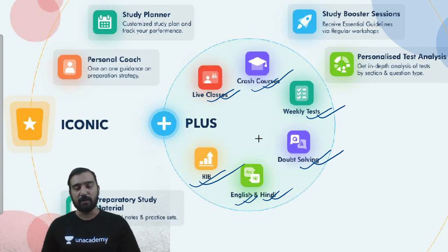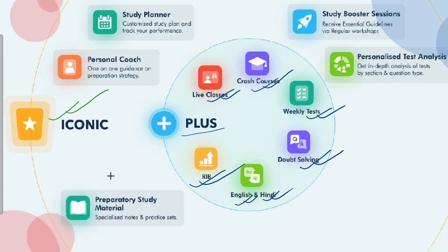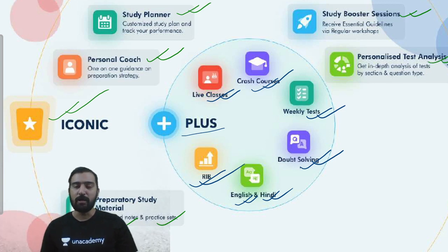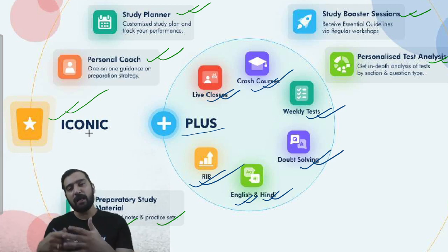It's not very expensive. Lecture ke end mein main aapko price bhi share karunga. Agar aap Unacademy Plus se bhi satisfy nahi ho, then you can go for iconic subscription. In iconic subscription, plus ke sare features milte hain, plus additional specialized notes and practice sheets, a personal coach assigned to you, a study planner, rank booster sessions, and personalized test analysis. Iconic is just a superset of Plus. The price is a little bit on the higher side — exact price main last mein bataunga.